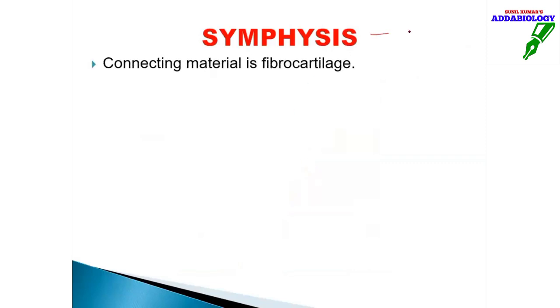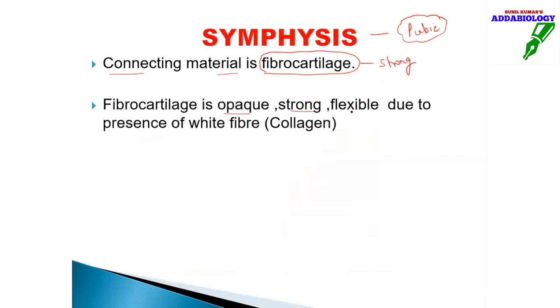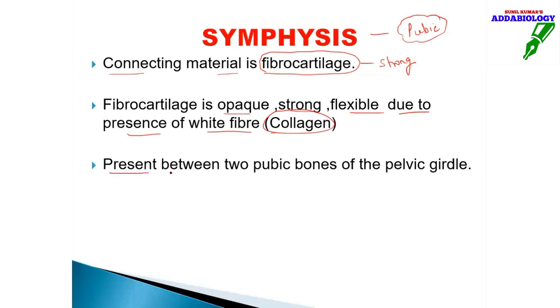In symphysis, the connecting material is fibrocartilage. Fibrocartilage is opaque, strong, and flexible due to the presence of white fibers (collagen). The major example of symphysis is the pubic symphysis, which is present between the two pubic bones. We know that the pelvic girdle is made up of two halves, each comprising three bones: ileum, ischium, and pubis. The two pubis bones join at the pubic symphysis.